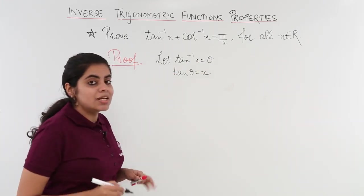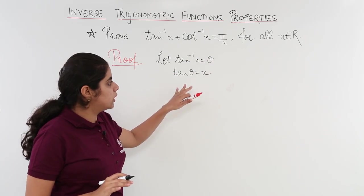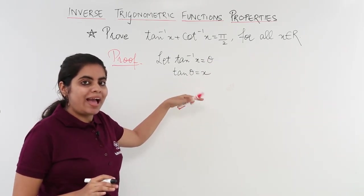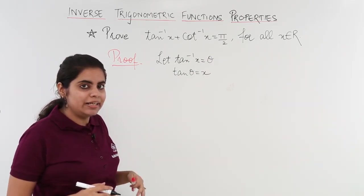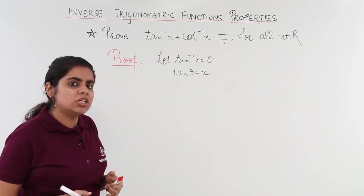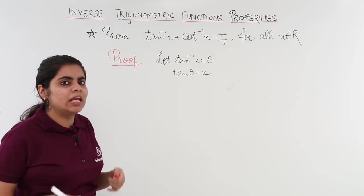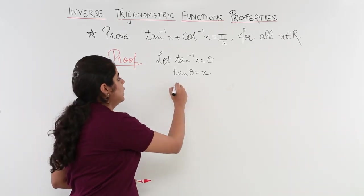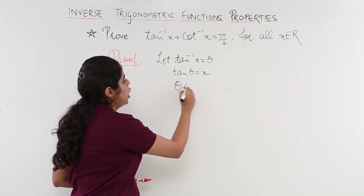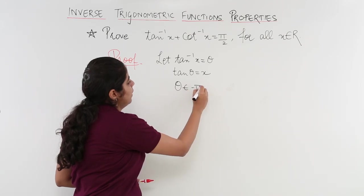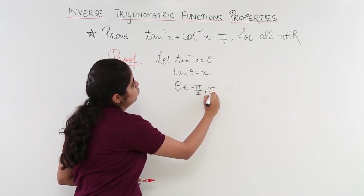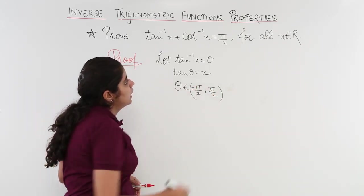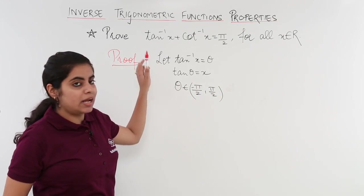Now tan theta equals x — but the story does not finish here. We look at the range and domain and the interval of theta. So theta belongs to the open interval minus pi by 2 to pi by 2, which we already know in the case of tan and cot.